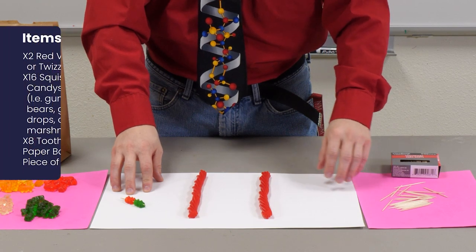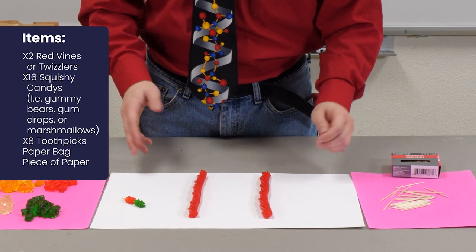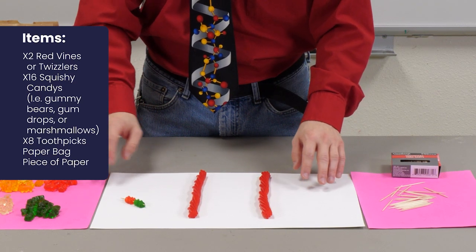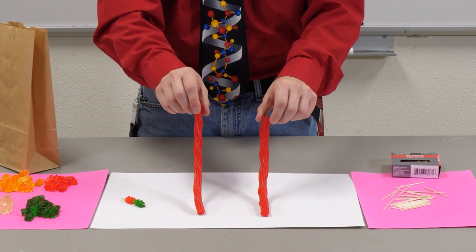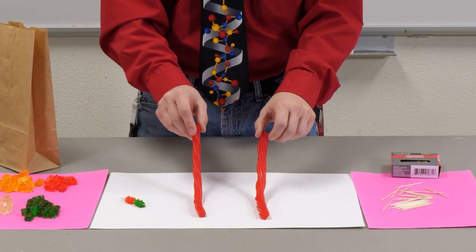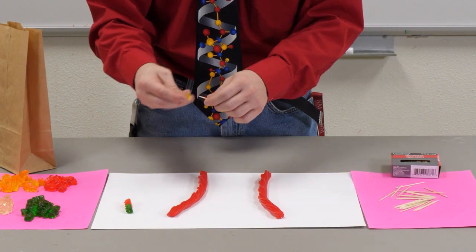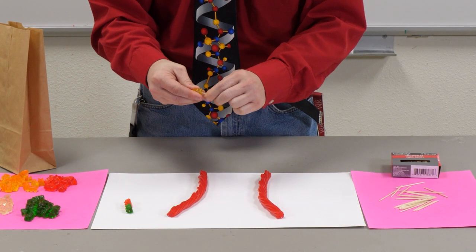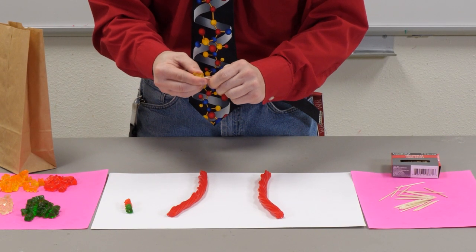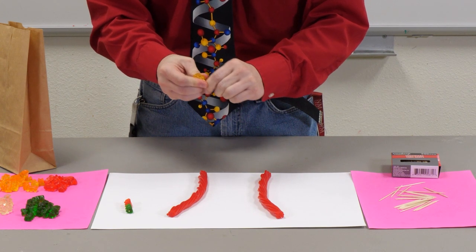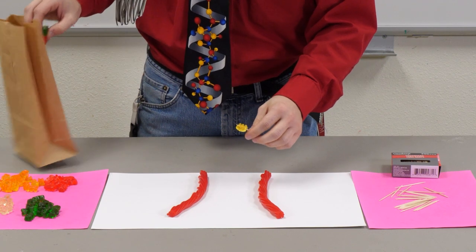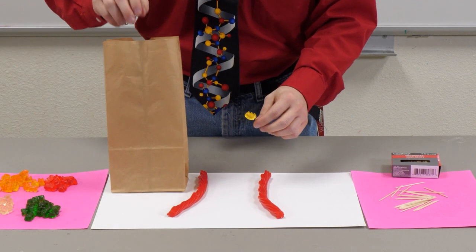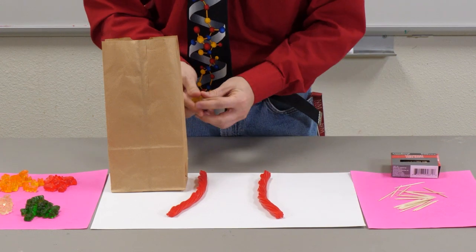The supplies you will need for this activity are a sticky colored candy like marshmallow, gumdrop, or for my example, I used gummy bears. You'll need four colors as each of these candies will represent our base pairs. You will also need Twizzlers or Red Vines to be the support for your candy DNA. You'll also need eight or more toothpicks to hold your base pairs and a paper bag and paper to work on.